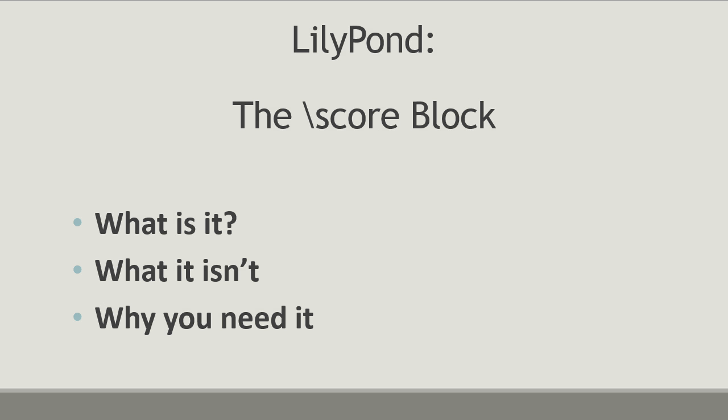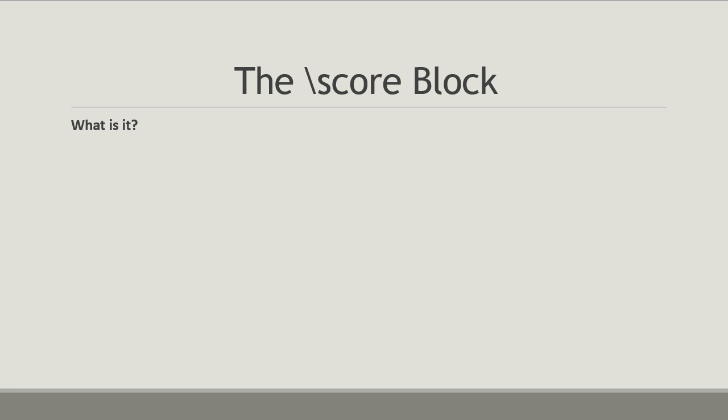Number one: what is the score block? In its most basic form, the score block is the place in your input file where you put everything relating to your actual score — it's where everything is summed together. You only put things in the score block that pertain to the score itself. I'll be spending the next few videos on the score block, covering best practices for various ensembles like full orchestra, chamber groups, wind ensemble, and SATB choir.